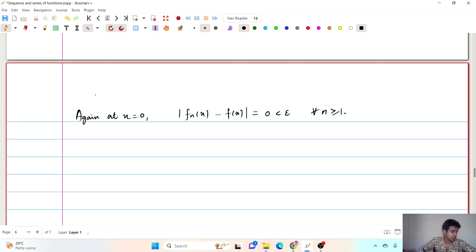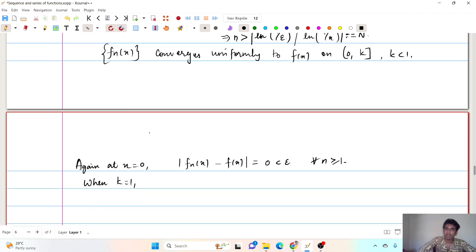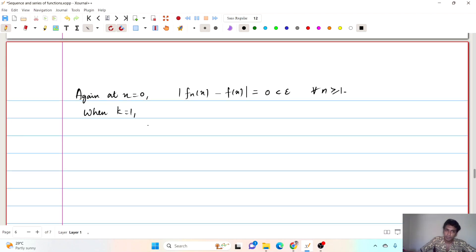Now, when x equals 0, absolute of fn(x) minus f(x) would be simply 0 that is less than epsilon for all n bigger than or equals 1. So, that shall also be included in the previous thing. Now, the question is what happens when k equals 1? When k equals 1, look at this quantity. What happens when k equals 1. So, when k equals 1, which means your x can take the value 1. Okay. That is what I meant to say. When x equals 1, this will go to infinite.